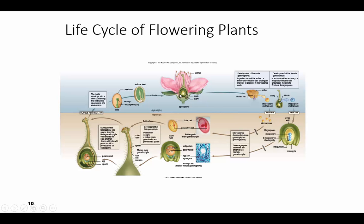The ovule is where the megaspore is going to develop as well. You're going to have four megaspores — one of them will become the egg, and the other three will disintegrate. Those microspores develop into the pollen grains, the male gametophyte, and you end up with the egg cell, which is the female, enclosed in the embryo sac gametophyte.